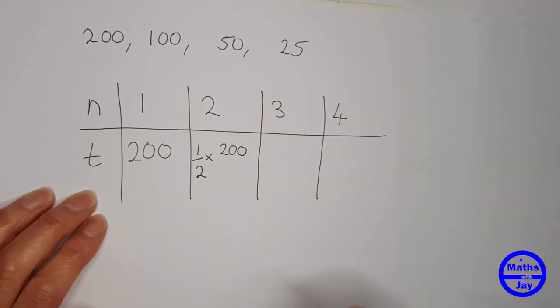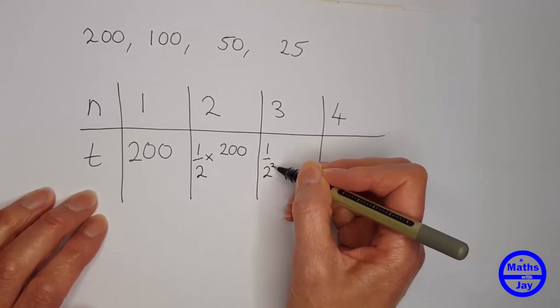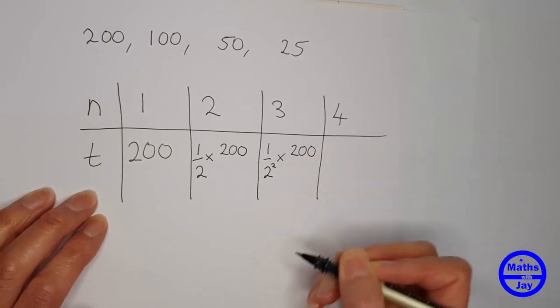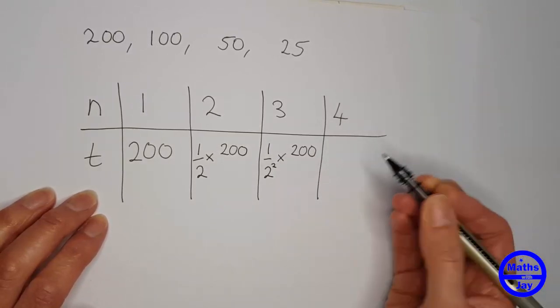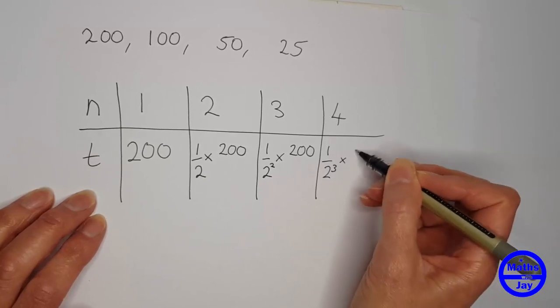And then when I come to 50 that is a half of a half or a half squared times 200. So that's a quarter of 200 isn't it? And then 25 is similarly an eighth of 200.